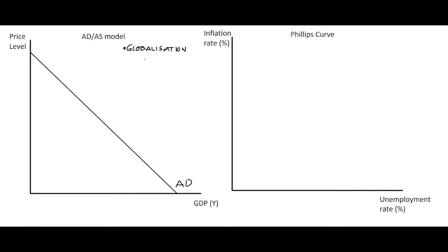What this has meant is that the capacity of the economy has increased, as firms can link into global supply chains and increase production very easily. There's an awful lot of flexibility there, and that has put downward pressure on prices.